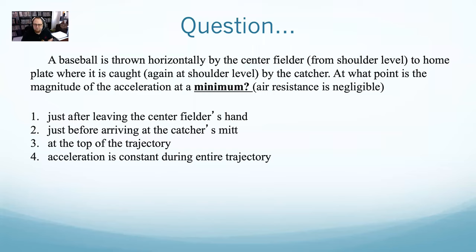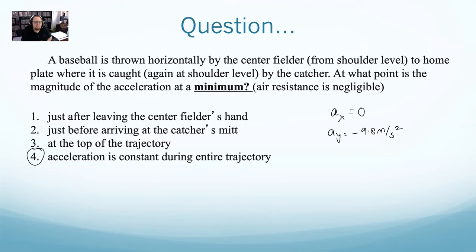That's been open for a minute. I got a pretty big selection of results. But the answer is that it's always the same. At all points, the acceleration in X is zero; at all points, the acceleration in Y is negative G. The velocity is at a minimum at the highest point because there the velocity in Y is zero and the velocity in X is whatever it was to begin with. But acceleration is always the same — acceleration in X is always zero, acceleration in Y is always negative G.